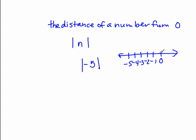We'll be able to just count. So negative five is one, two, three, four, five spaces away. So the absolute value of negative five is five.